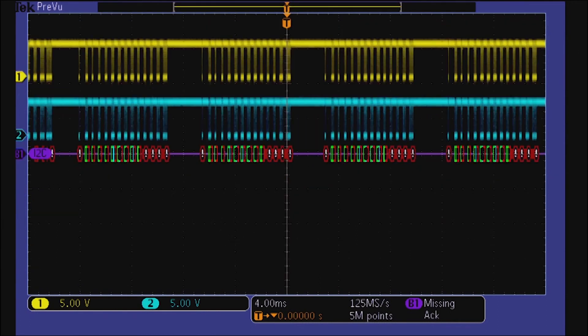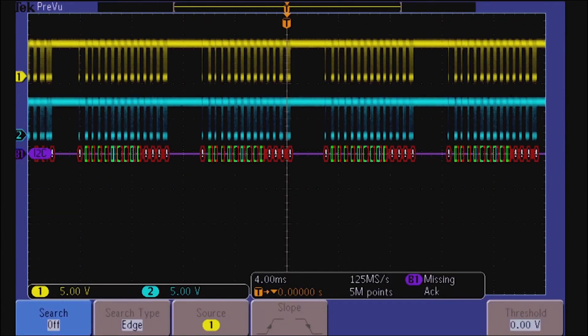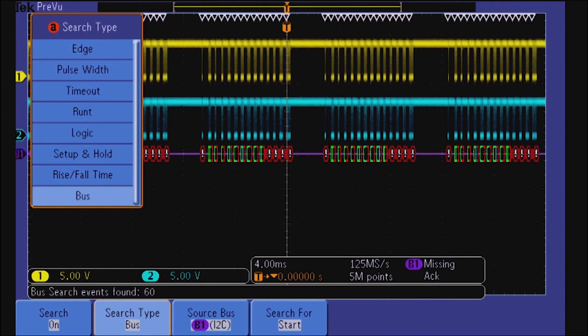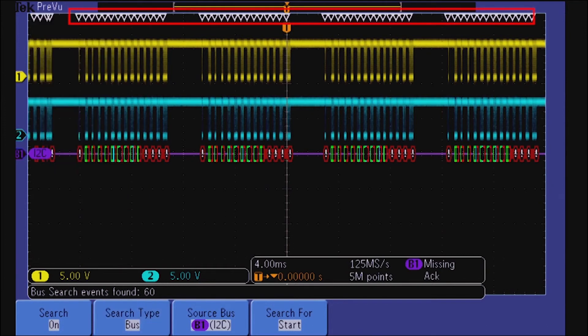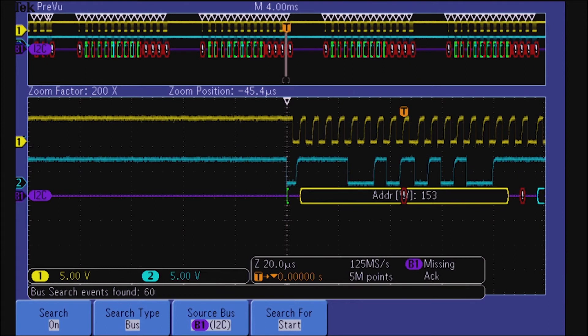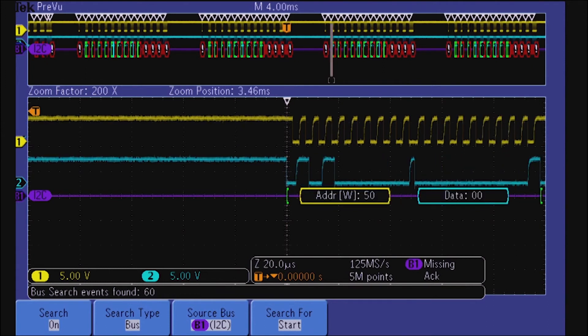You can automatically search an acquisition for all instances of an event you specify. For example, you can tell Wave Inspector to find every start condition in the acquisition. Wave Inspector will mark every start condition and let you jump quickly from message to message.